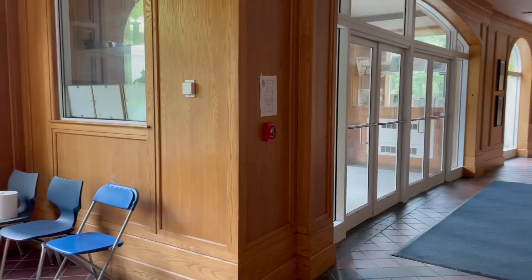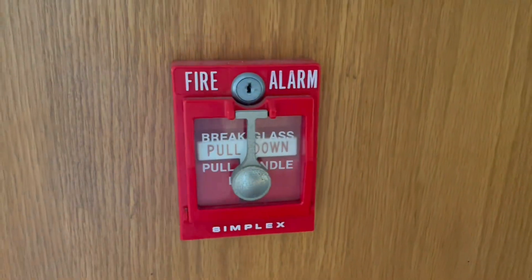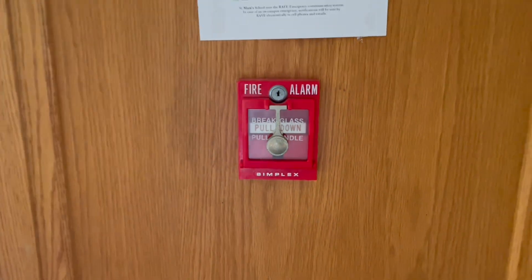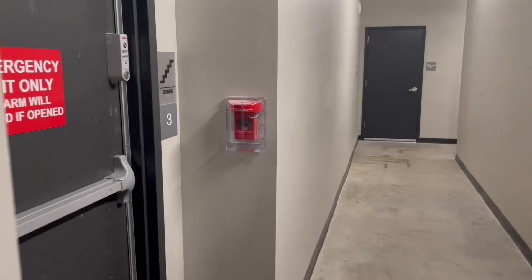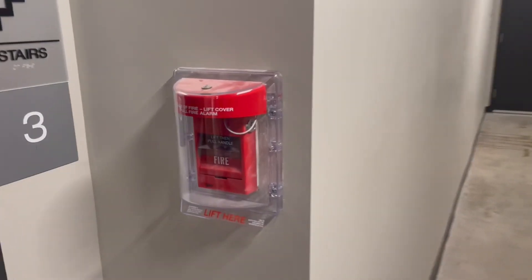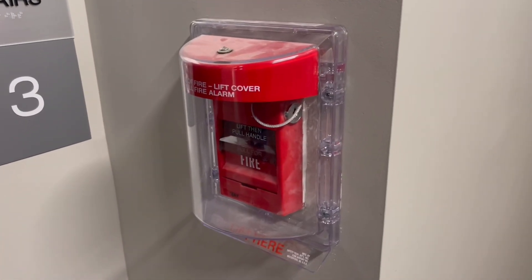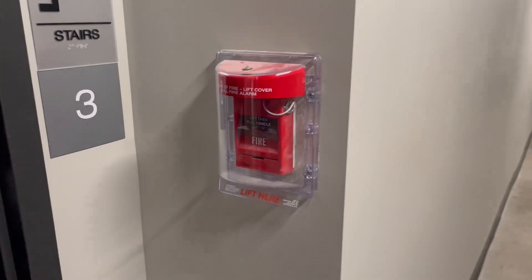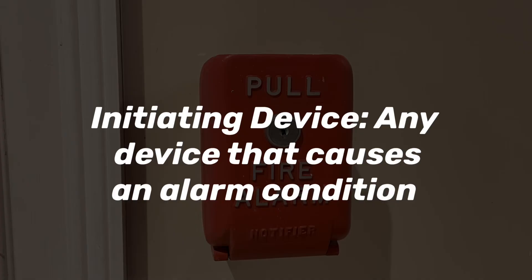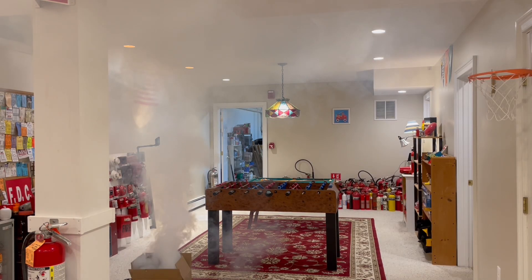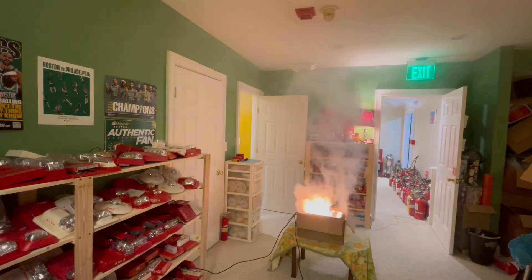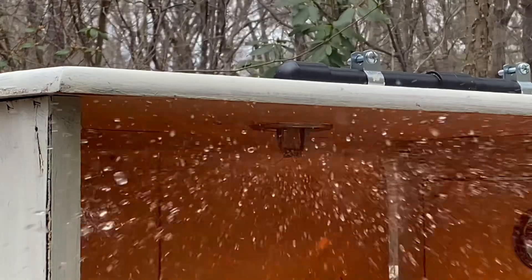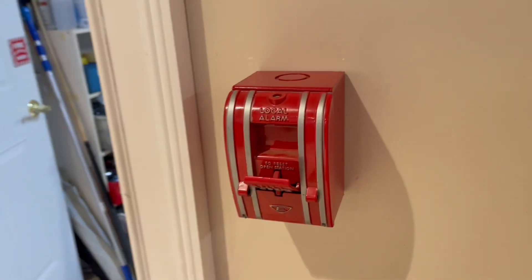Manual pull stations are very common initiating devices that are installed throughout buildings. They provide a way for occupants to manually activate the fire alarm system in an emergency. They're usually installed near exits so that occupants can pull the alarm while leaving the building. Initiating devices are any fire alarm device designed to respond to a stimulus — such as smoke, heat, water flow, or a person pulling an alarm — and activate the fire alarm system.